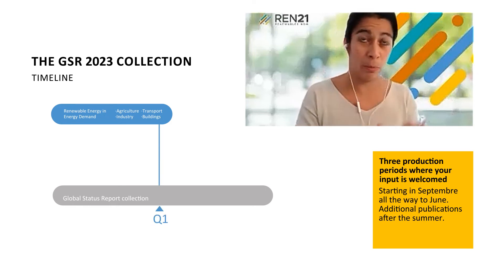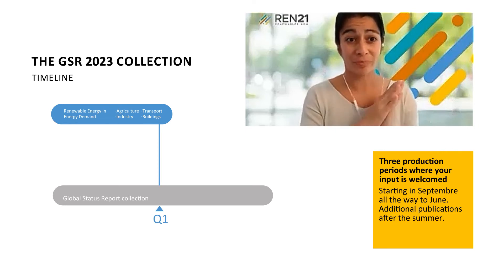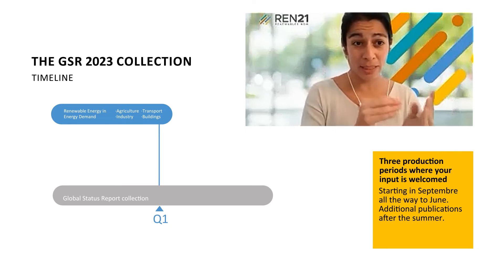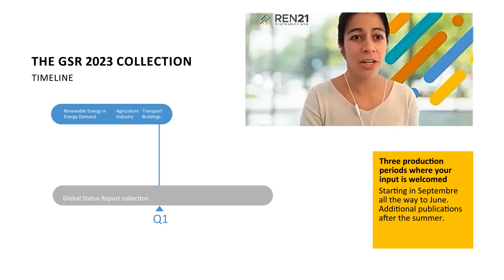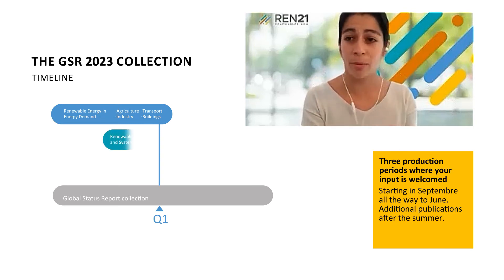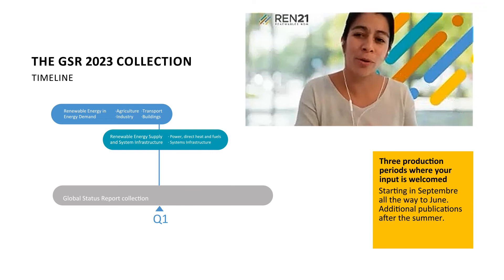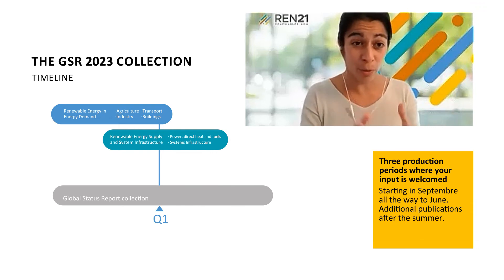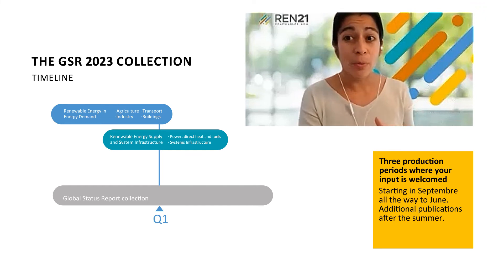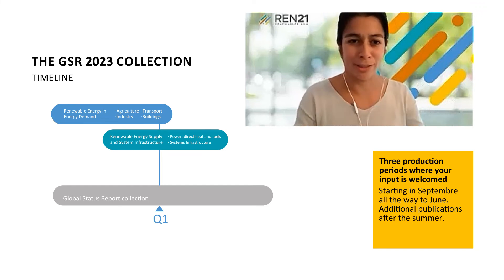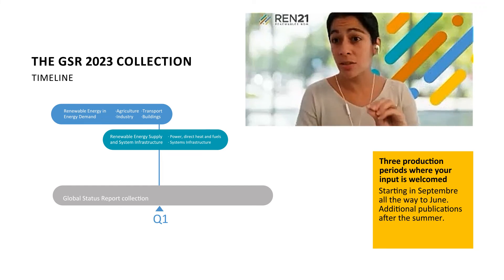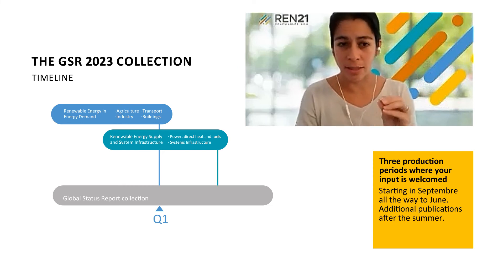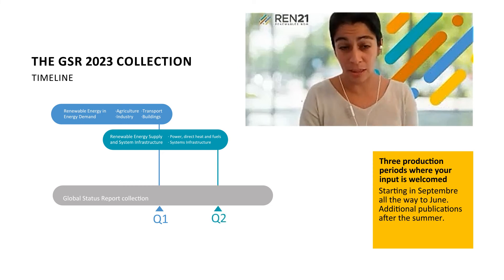We will aim to have the energy demand module publication around the first quarter of the year, so normally March. The second part will start a little later, including the energy supply — the market and industry module covering power, direct heat, and fuels — as well as the system infrastructure, leading to a publication around May.